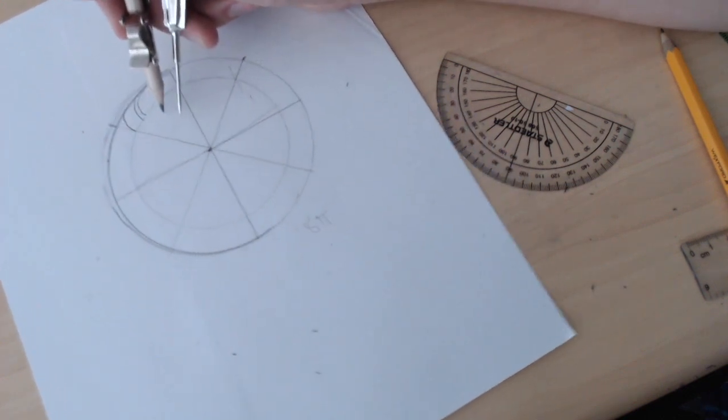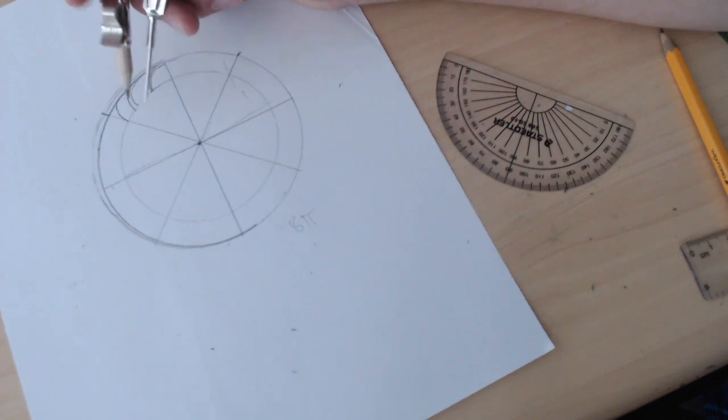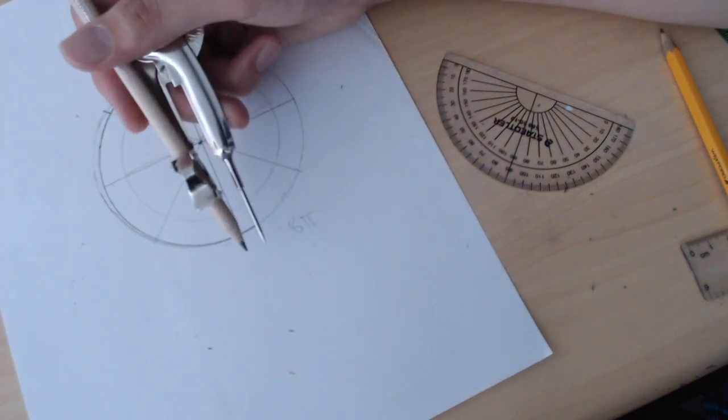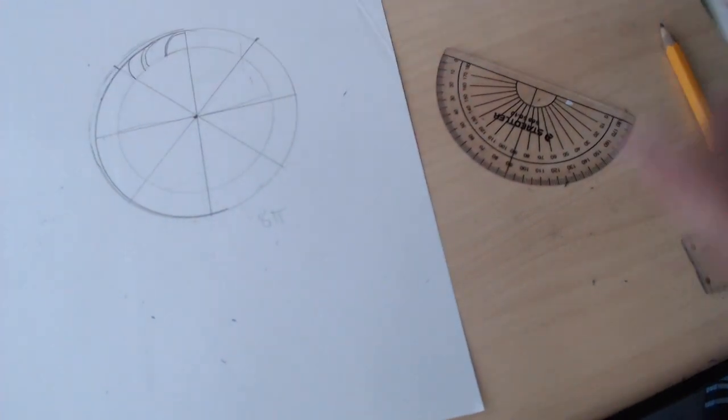So shown here we have three teeth marked out. As you can see there are some errors in like this line here, and that's just because of how bad this compass is. If you have a better compass or set of dividers you can make a more accurate gear.